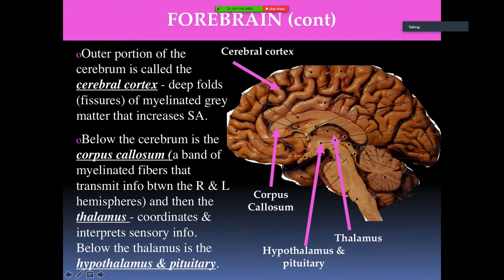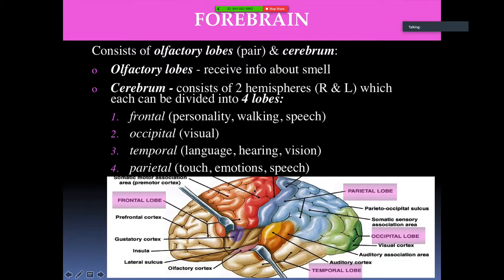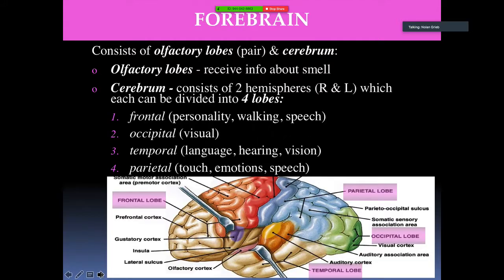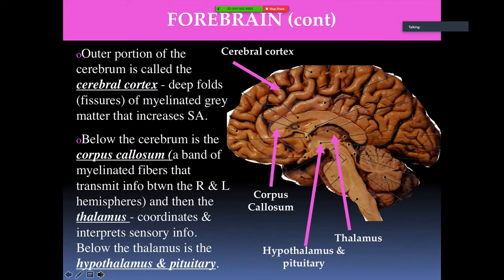The thalamus coordinates and interprets sensory information and is located almost right in the center of the brain. Below the thalamus is the hypothalamus, and adjacent to it is the pituitary gland.